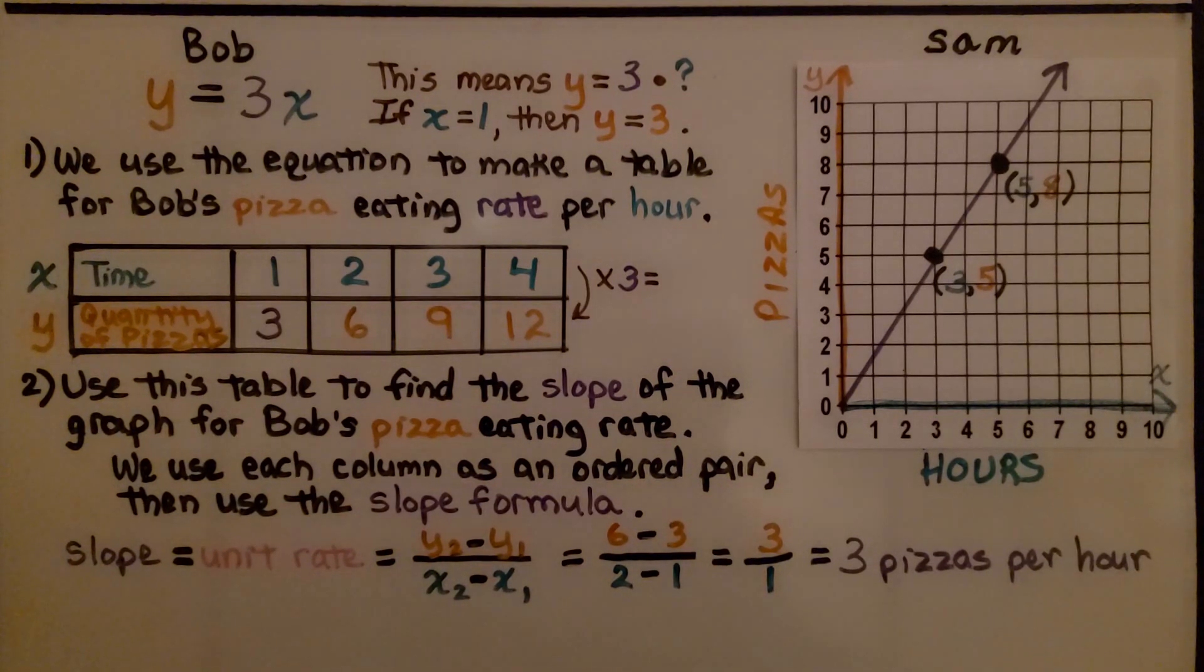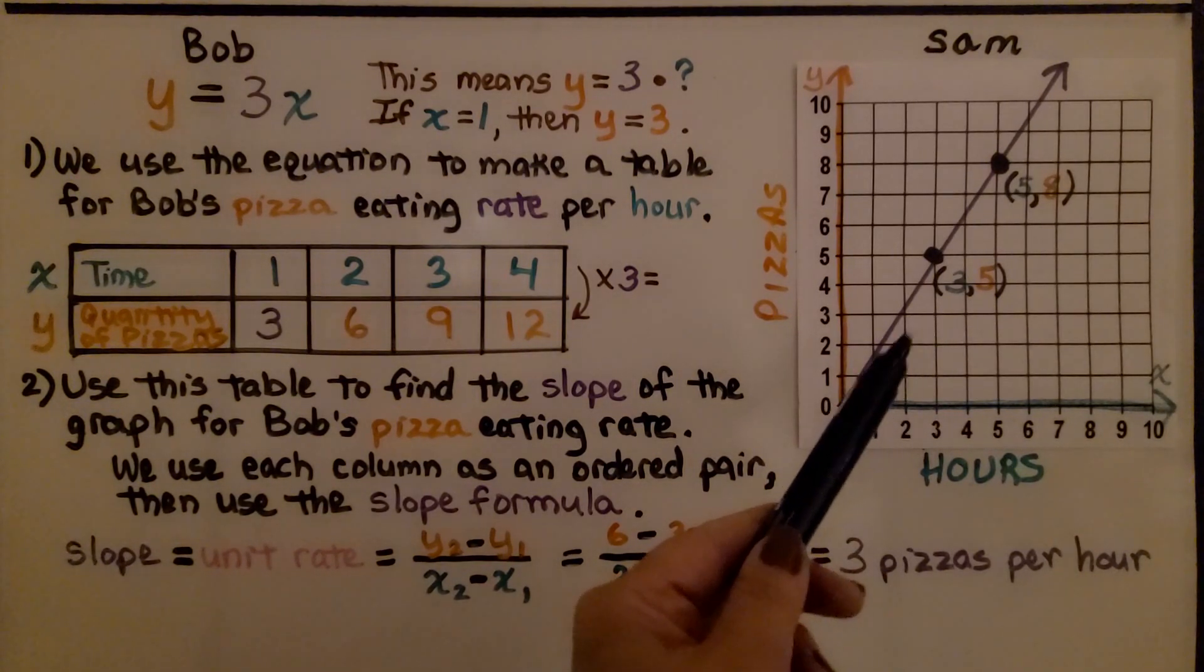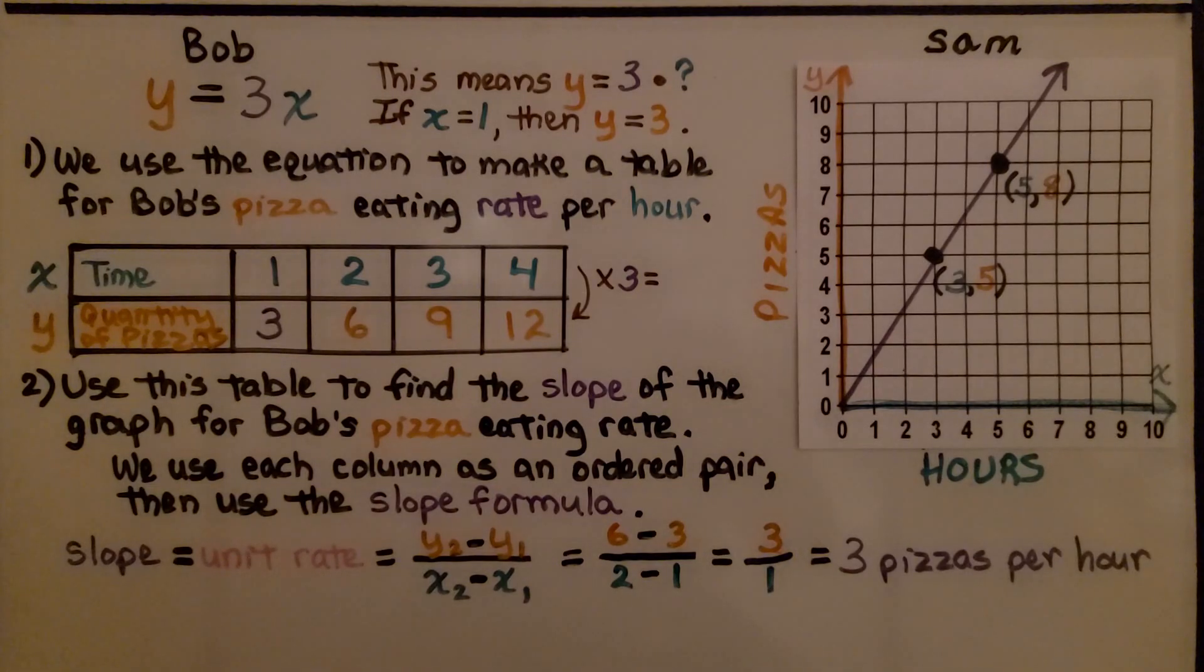That's our rise over run. When we simplify it, Bob is eating 3 pizzas per hour. Now, we can look at Sam's graph to find how many he's eating per hour.